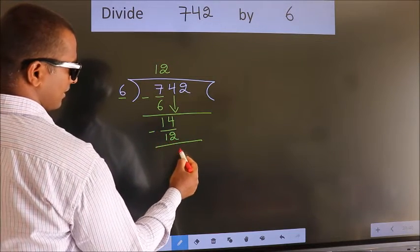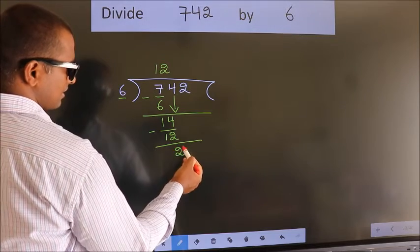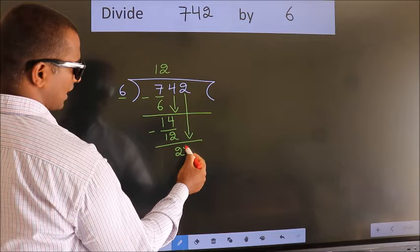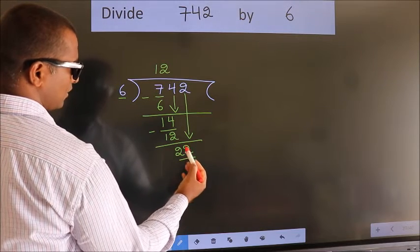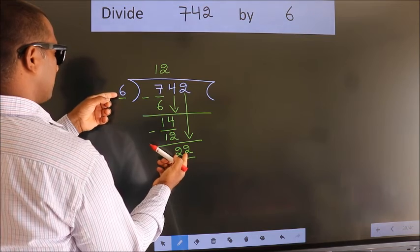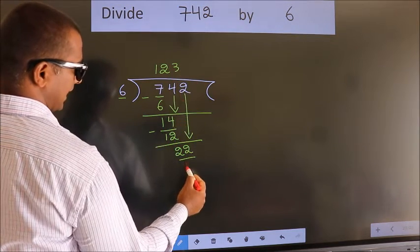We get two. After this, bring down the beside number, so two down. So twenty-two. A number close to twenty-two in the sixth table is six threes eighteen.